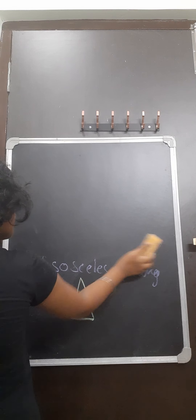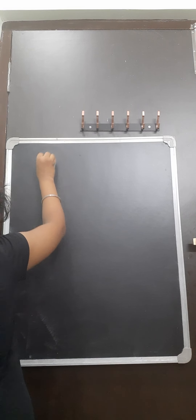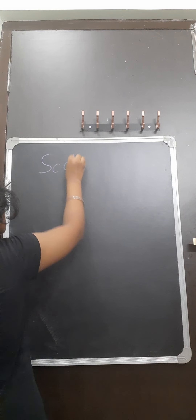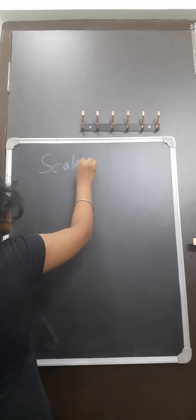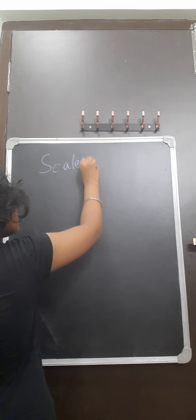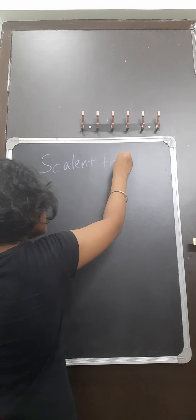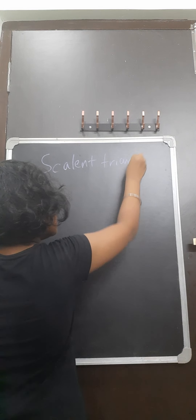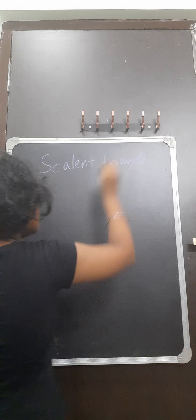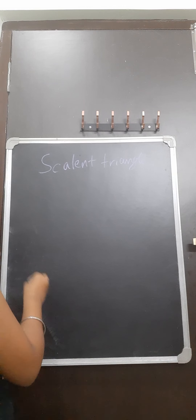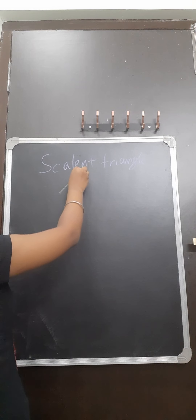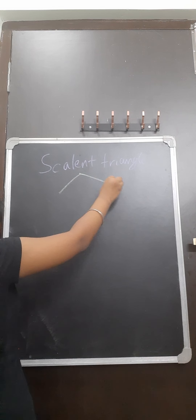Next, Isosceles Triangle. The two sides of the triangle are equal while the other is not. So two sides of the triangle are equal and the other is not. That kind of triangle is known as Isosceles Triangle.